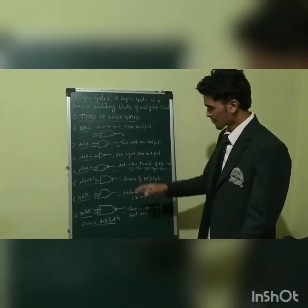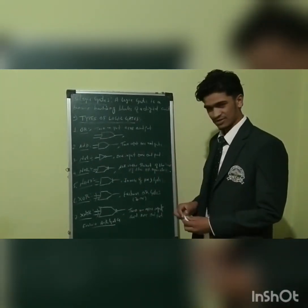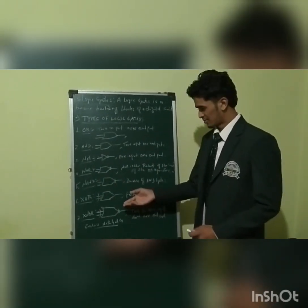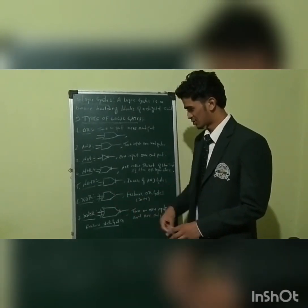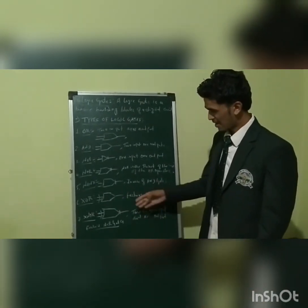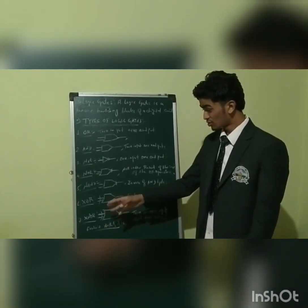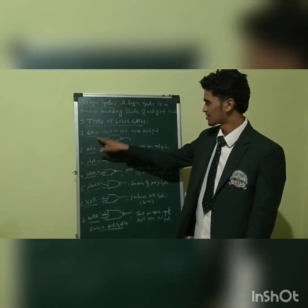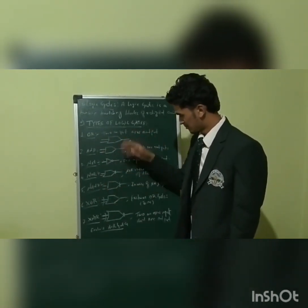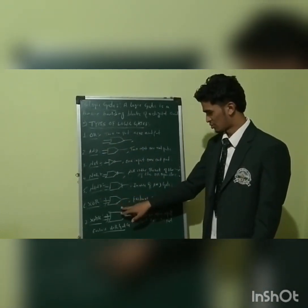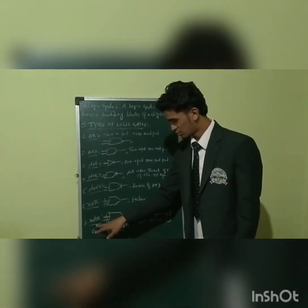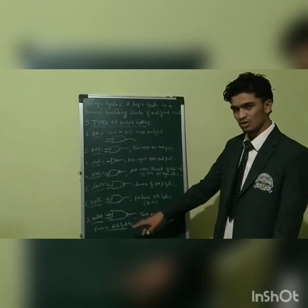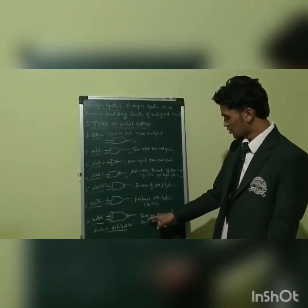Number six is the XOR gate, also called the exclusive OR gate. Here is the symbol of the exclusive OR gate. Number seven is the exclusive NOR gate, which also takes two or more inputs.